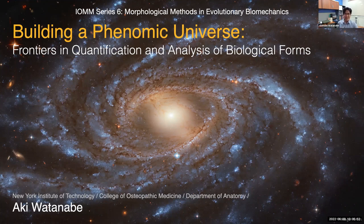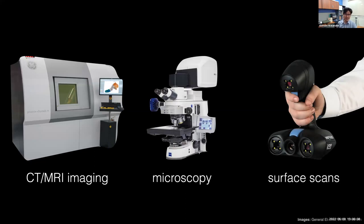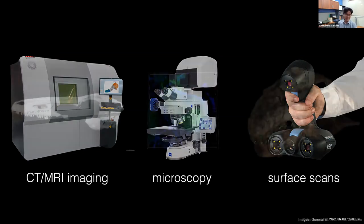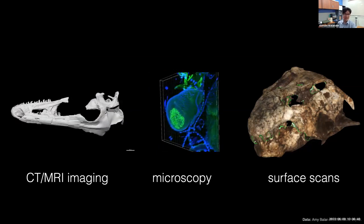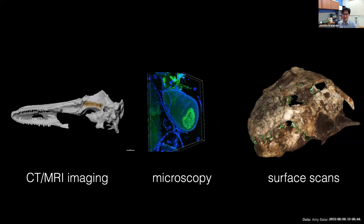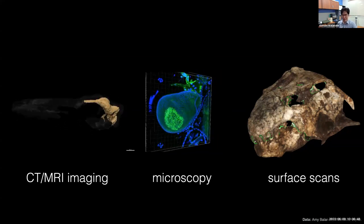A phenome means an organism's sum total of its phenotype. I envision this phenomic universe as an extended metaphor for all the morphological data that all of us are collecting together across different taxa across deep time. Today in my presentation I'm going to give a brief overview of some of the techniques you can use to quantify and analyze biological forms. What's been exciting this century is advancements in imaging modalities — computer tomography or CT, MRI, microscopy with z-stack images at very high resolutions, and surface scans that have become really portable and affordable in the last decade.